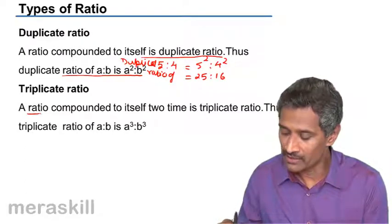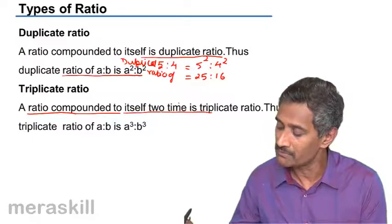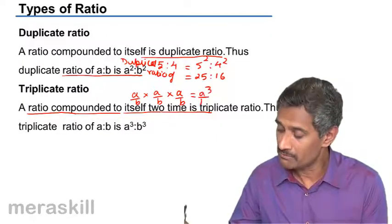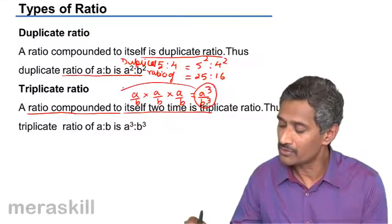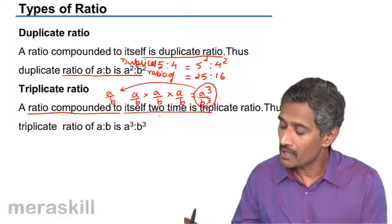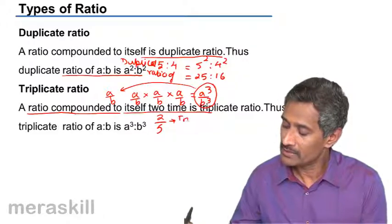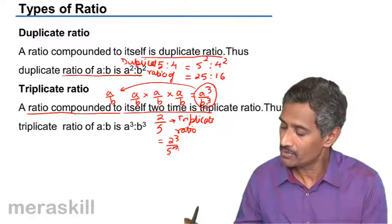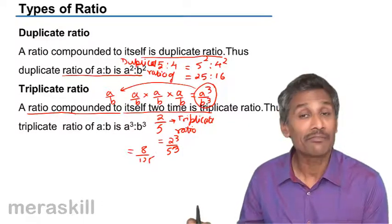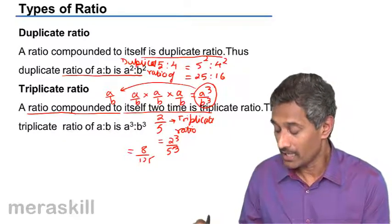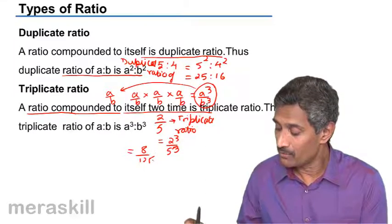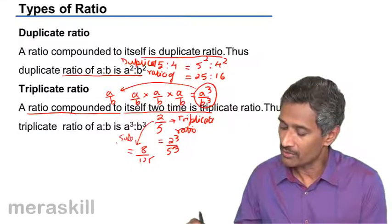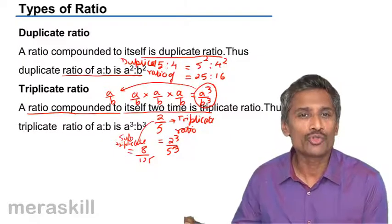Triplicate ratio, as indicated earlier, is a ratio compounded to itself two more times. That means you have a ratio A/B, compound it with itself two more times — A/B into A/B — and you get A cube by B cube. This is called the triplicate ratio of A/B. For example, the triplicate ratio of 2 is to 5 is 2 cube by 5 cube, which is 8 is to 125. If 8/125 is the triplicate ratio of 2/5, then 2/5 is the sub-triplicate ratio of 8/125 — they share a mutual reciprocal relationship.